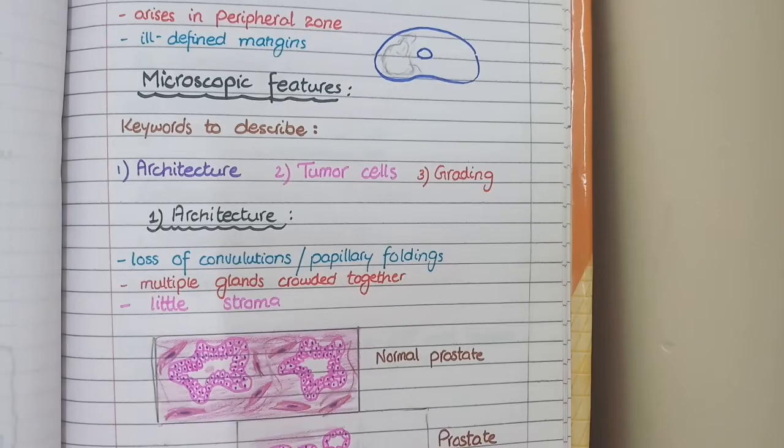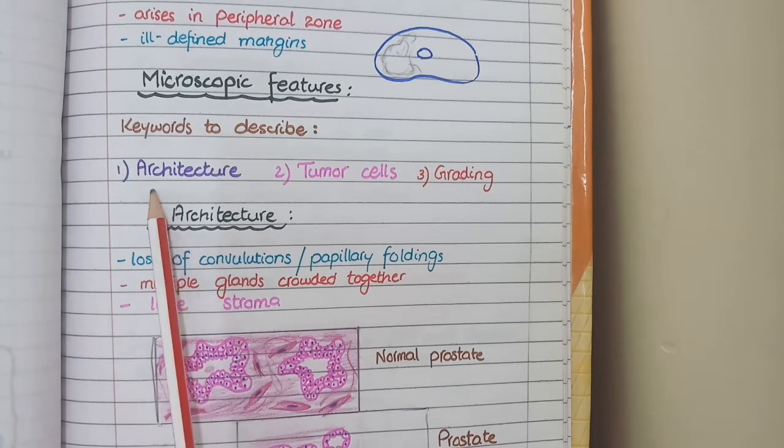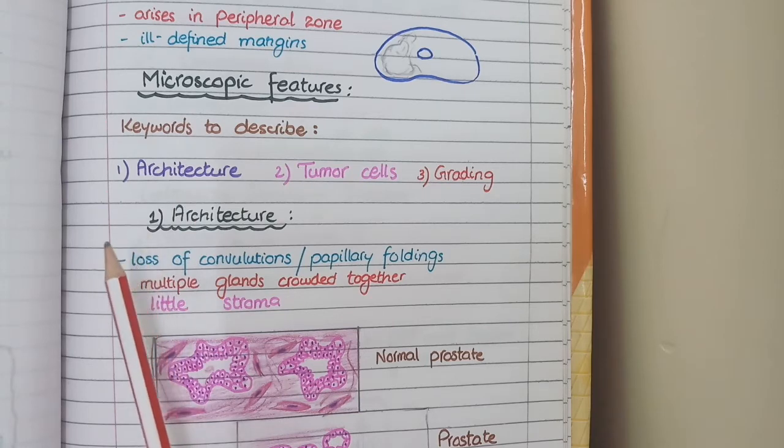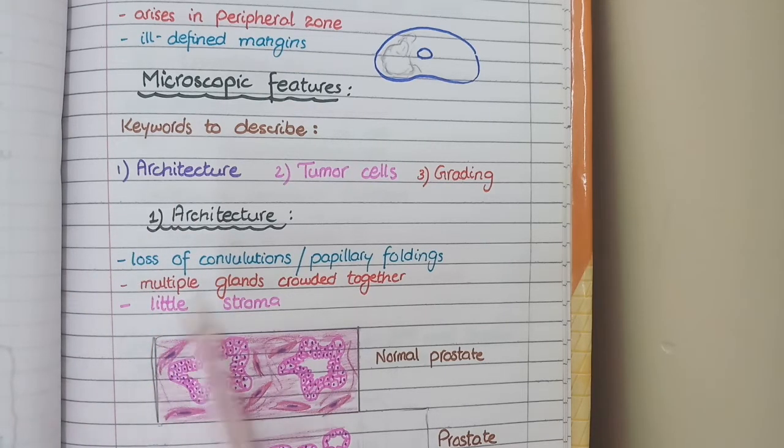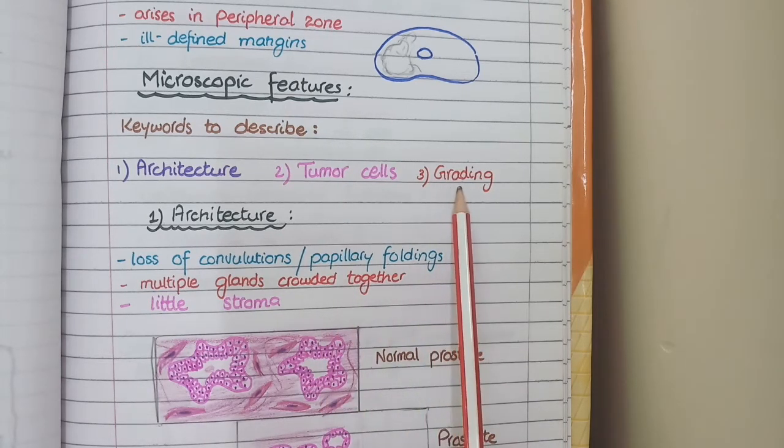Now let's come to the microscopic features of prostatic carcinoma. For microscopic features, you have to discuss the pathological changes under three main headings. First is the architecture in prostate carcinoma which means how does the overall neoplastic tissue appear on microscope. Second is the tumor cells, that how do the individual tumor cells look like. And third is the grading of prostate cancer, whether it is low-grade or high-grade.